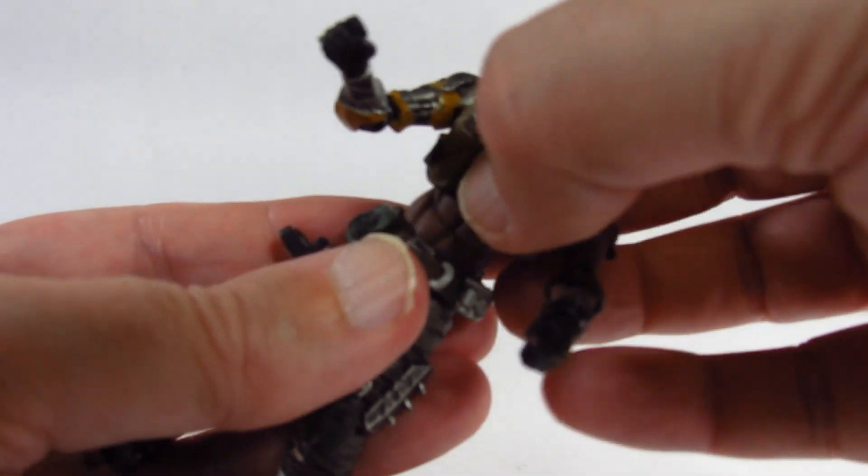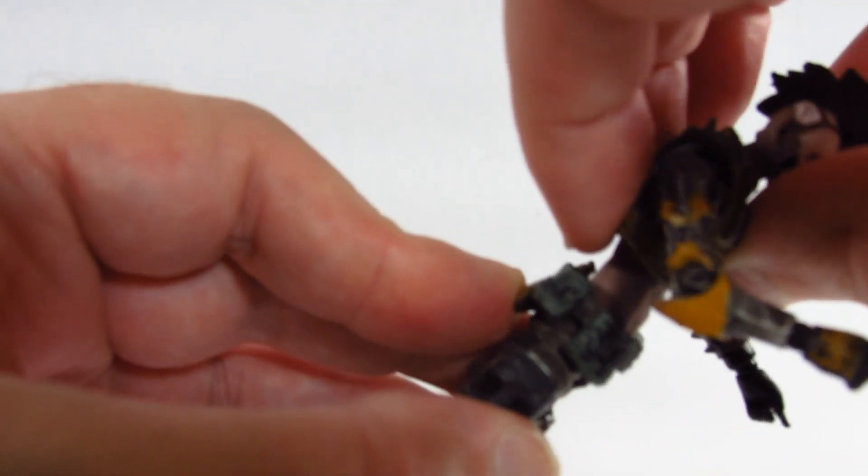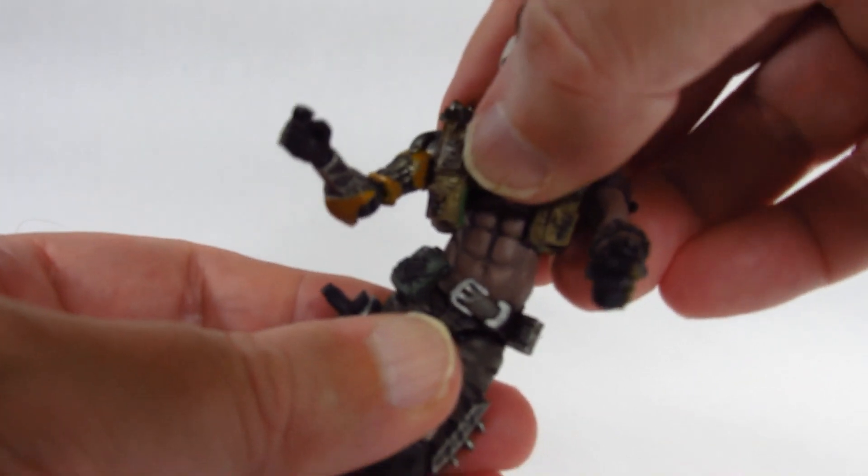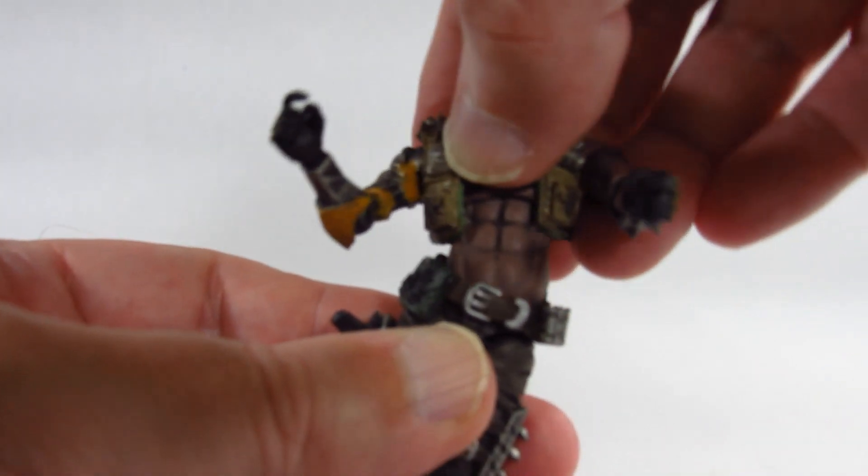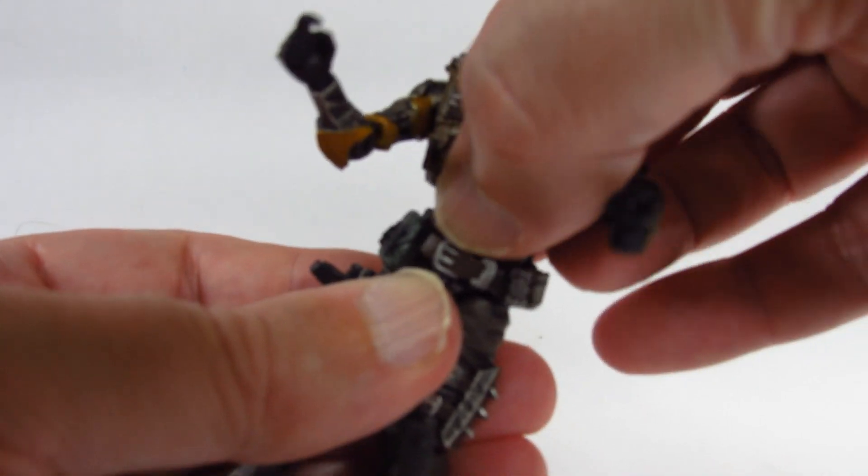But it looks like a ball joint, so we can crunch forward quite a bit at the waist, move back, go side to side, all the way around. So a lot of articulation there, so there's a ball joint there.